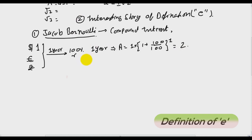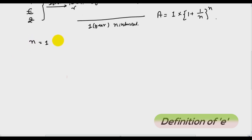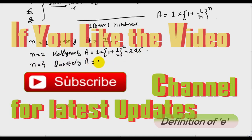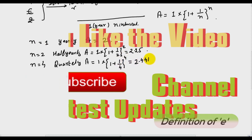Then consider a case when the bank pays the interest after n intervals. So 1 year, n intervals. Then what will be the formula of the amount? It will be 1 into 1 plus 1 by n raised to power n. So if n is 1, it is yearly and amount is 2 by this formula. When n is equal to 2, it is half yearly and amount is 2.25. When n is 4, it is quarterly and amount is 2.4414.